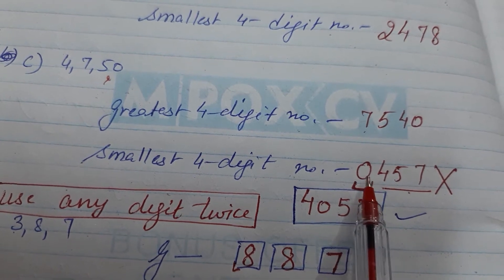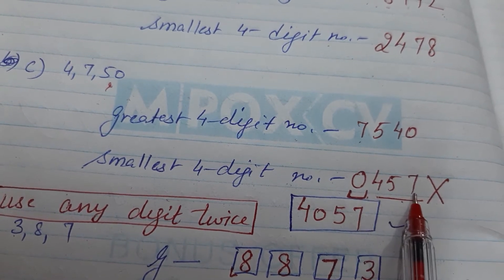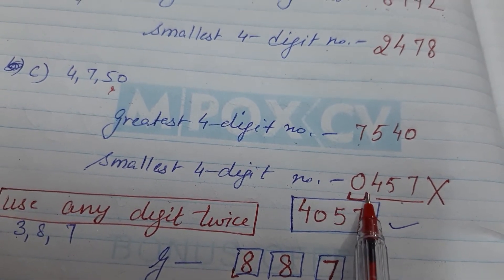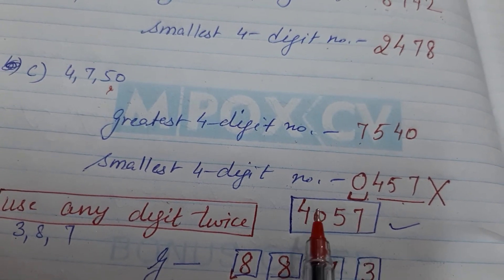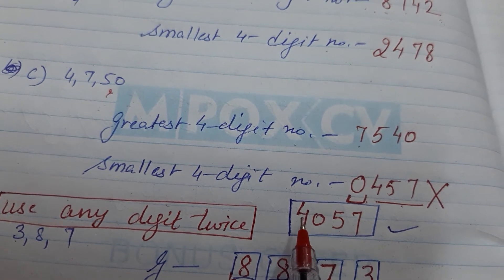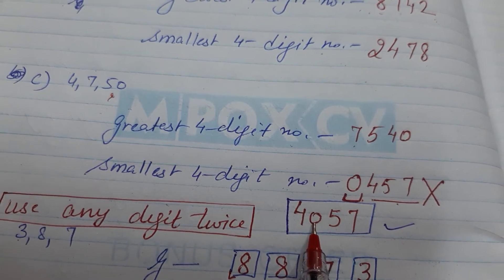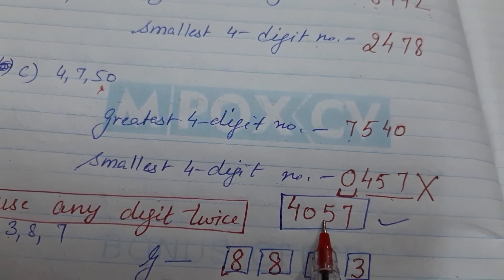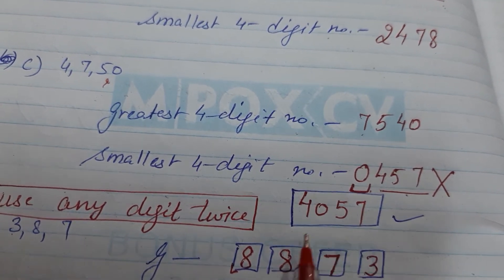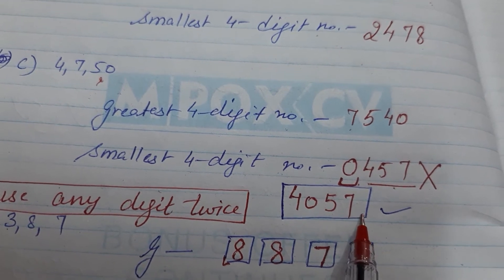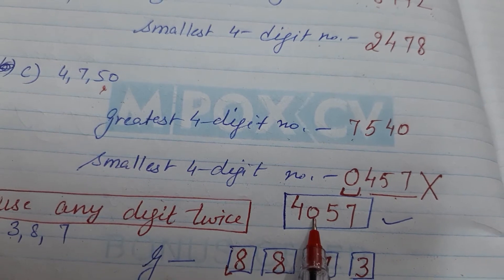For the smallest four-digit number, I will start with 0, but if I write the number as 0457, it will become a three-digit number because it starts with 0. So the number should not start with 0. We have to start with the smallest number after 0, which is 4. Then I put 0, and then write the other numbers in increasing order. So this will become 4057.